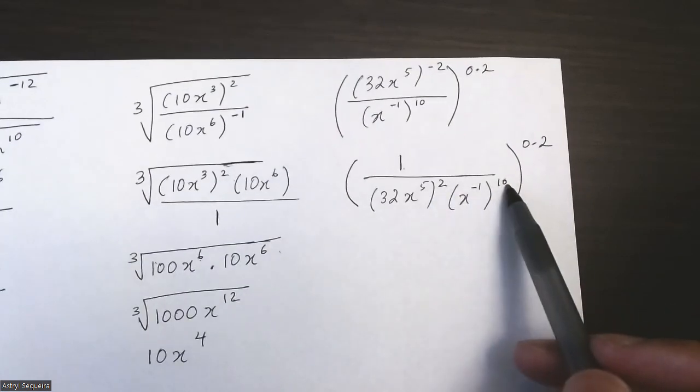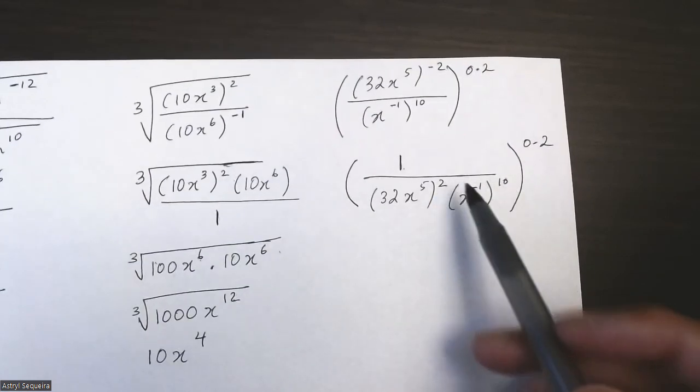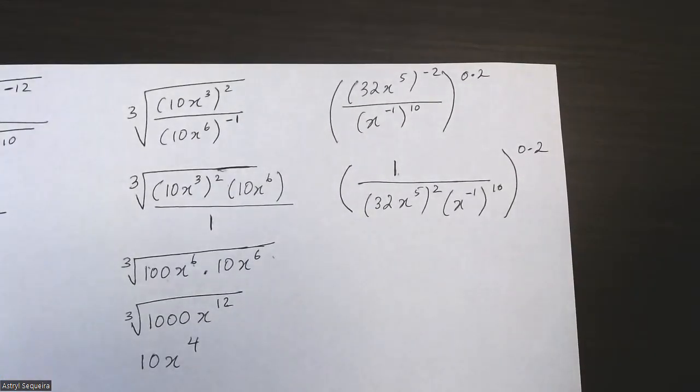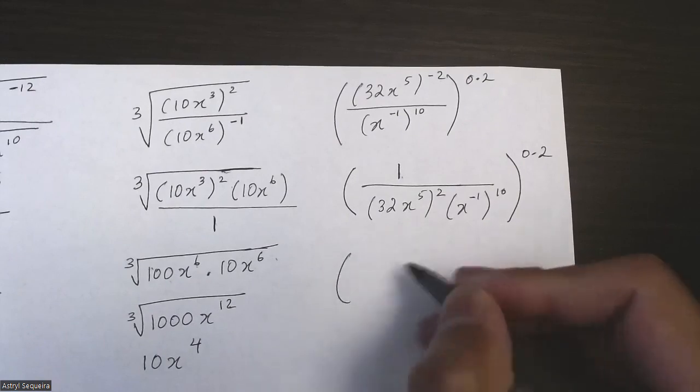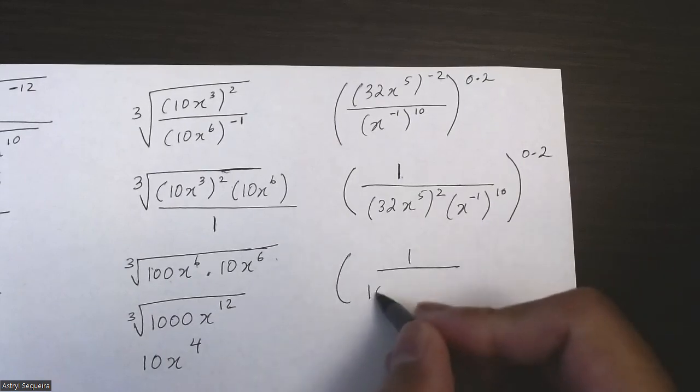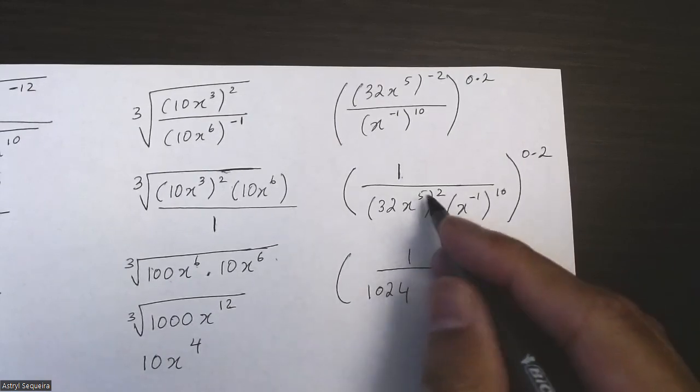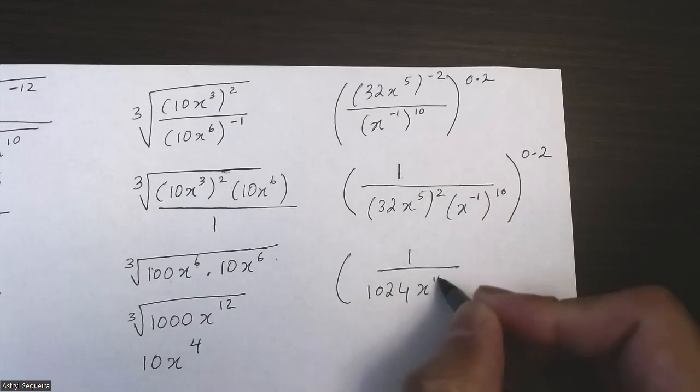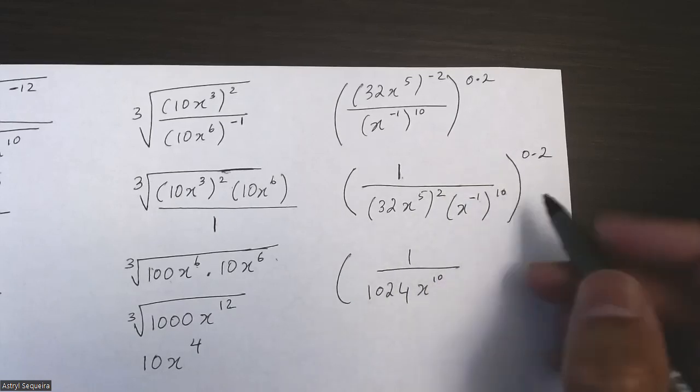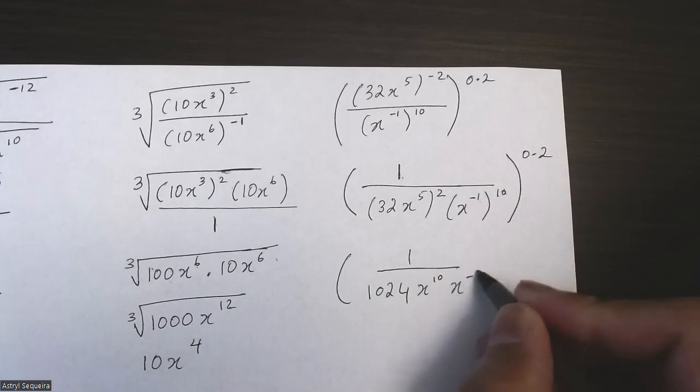Now I want to simplify my exponents. I want to multiply my two exponents into the bracket. So 32 squared—you'd have to do that in a calculator—that is 1 over 1024. And 5 times 2 is just 10. Here negative 1 times 10 is just negative 10.